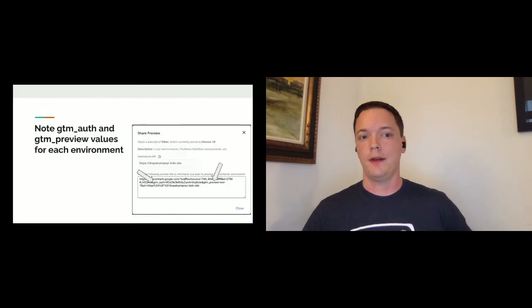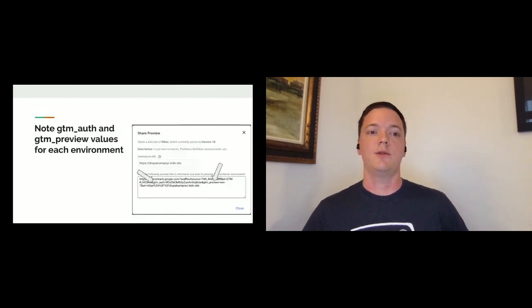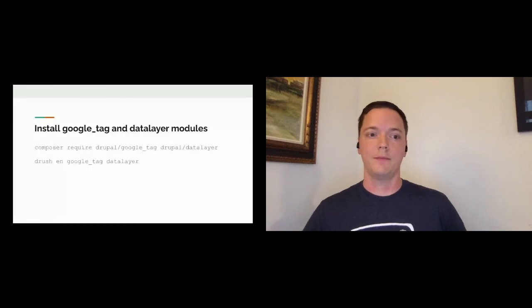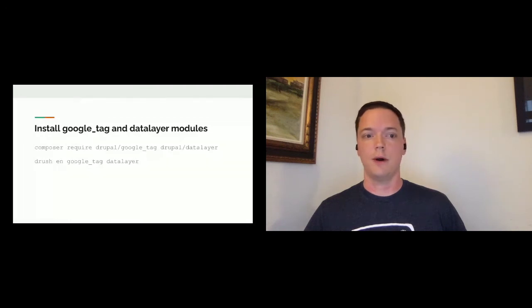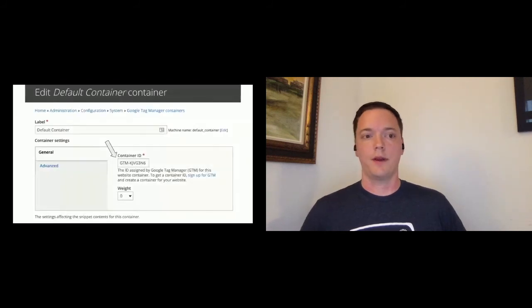We need to make sure we've disabled the Google Analytics module if we had one already, since it will conflict. Now it's time to install the Google Tag Manager module and the Data Layer module. We'll use Composer and then Drush, or you can use the UI to enable them depending on your setup.